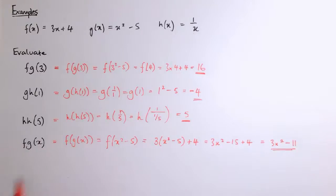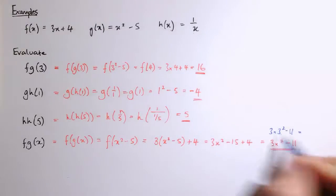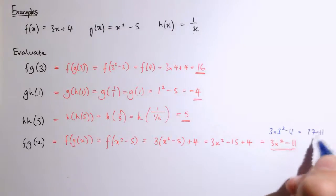For example, earlier we did fg of 3. We could now just instead put that into here and say that 3 times 3 squared minus 11, that's 27 minus 11, that also gives us 16, the same value, thankfully, as we got before.